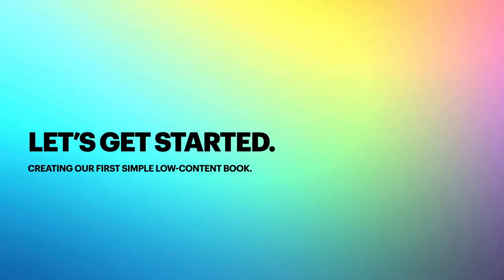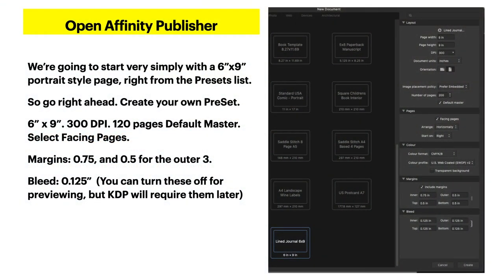Let's get started creating our first simple low-content book. Open Affinity Publisher — we're going to start very simply with a six by nine portrait style page right from the presets list. We're getting started pretty quickly. Go ahead and create your own preset — it's very easy. Put in the following measurements: six by nine, 300 DPI, 120 pages, default master, select facing pages.